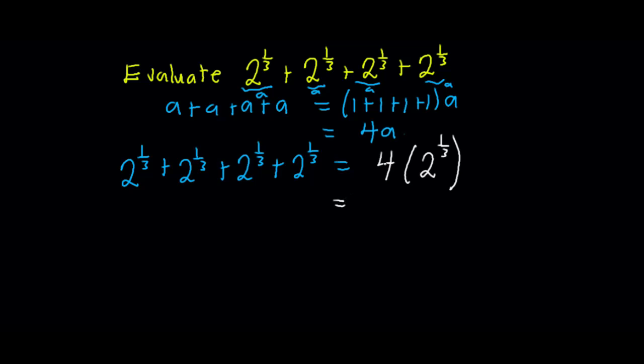Now, 4 is the same as 2^2, and this is multiplying 2^(1/3). Now, from the law of indices, this gives us 2^(2 + 1/3).